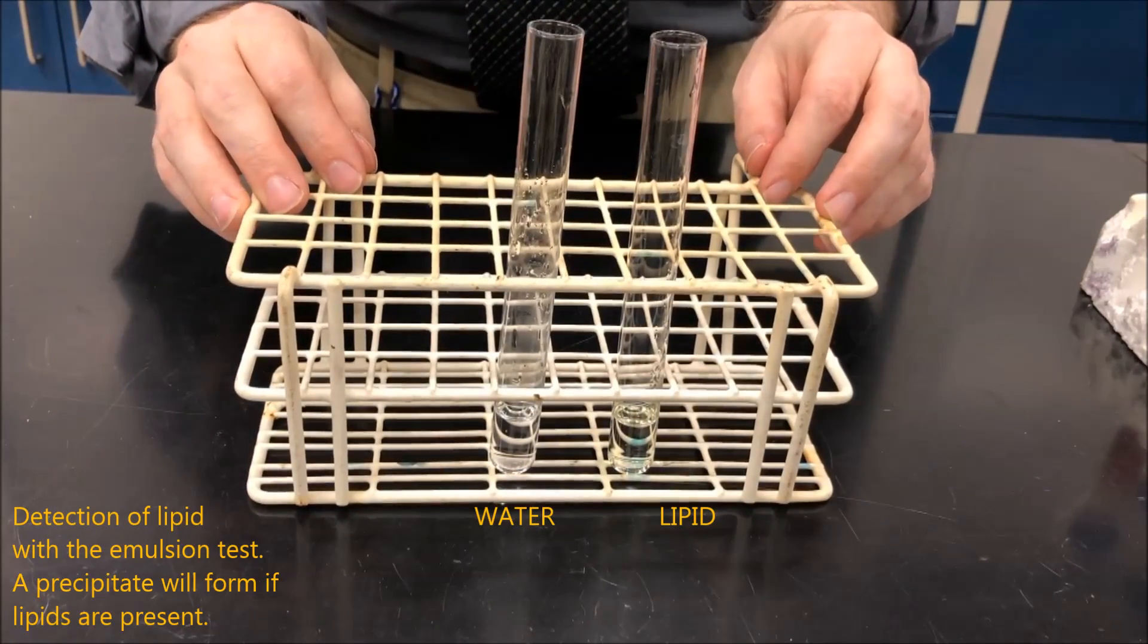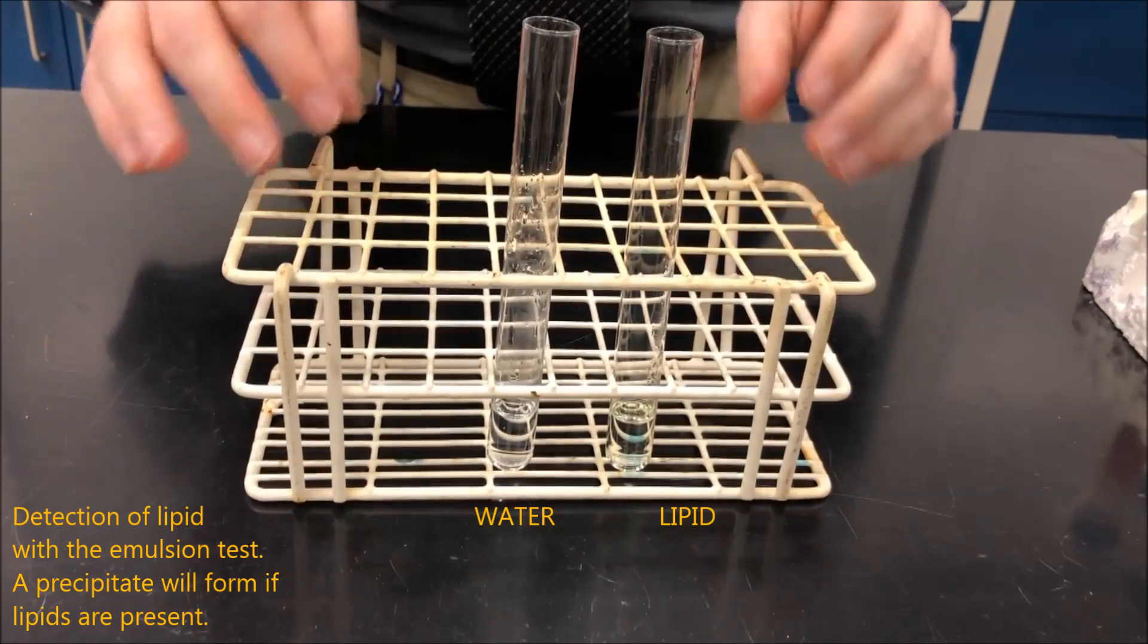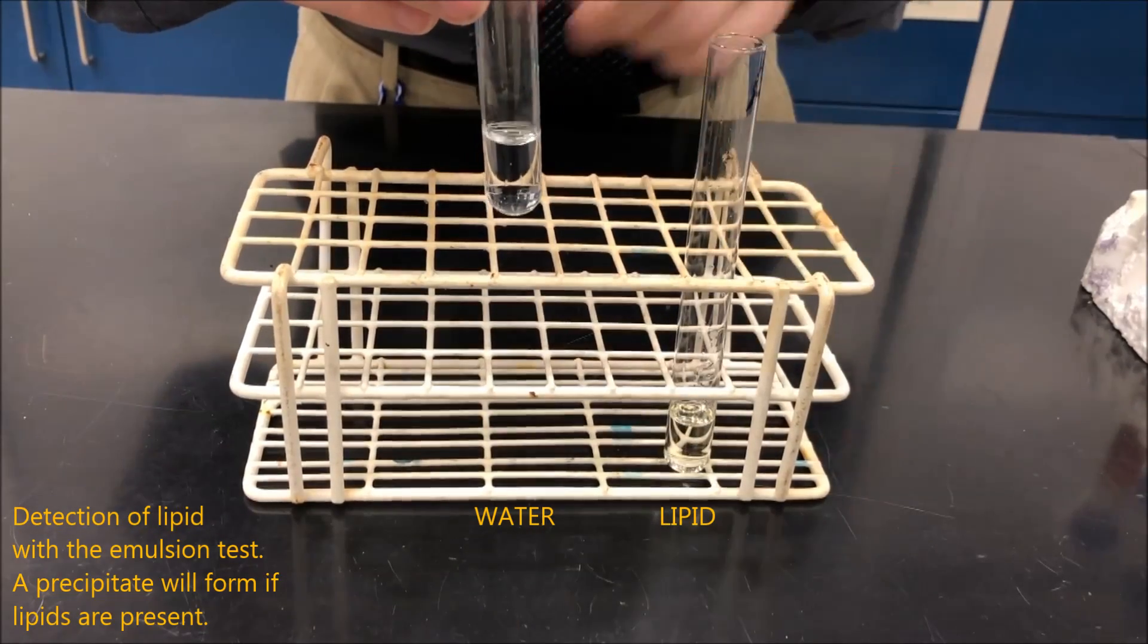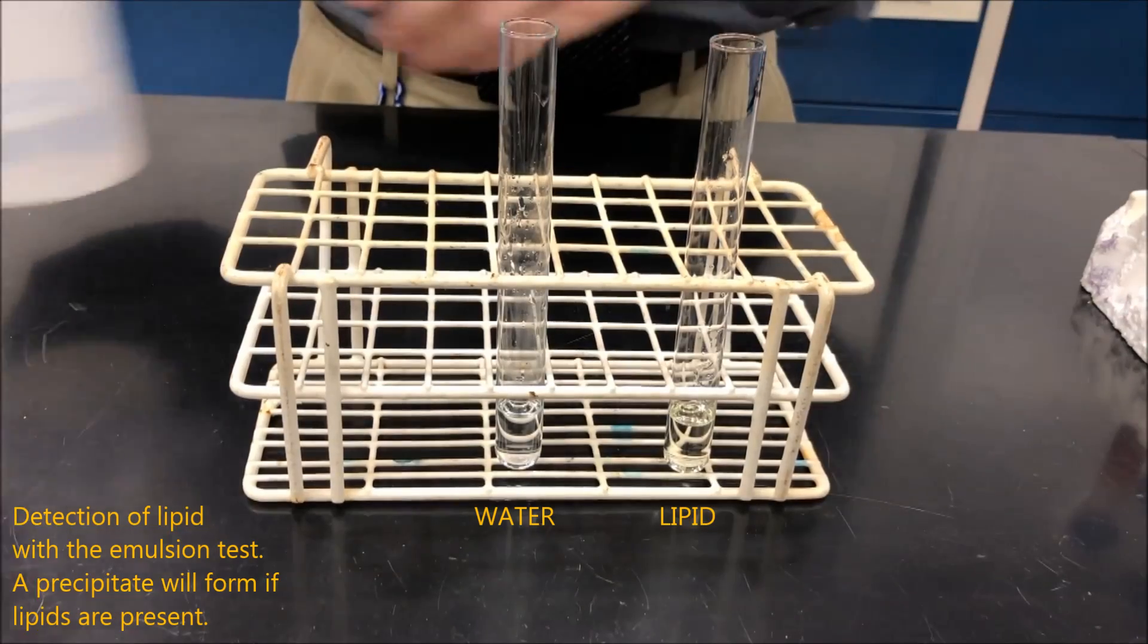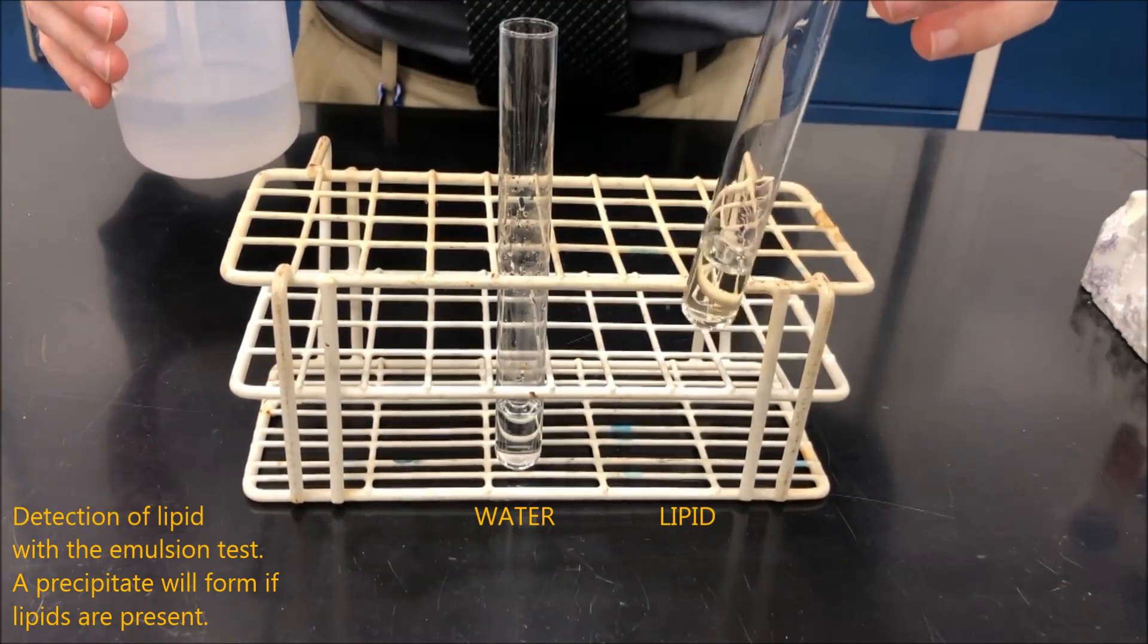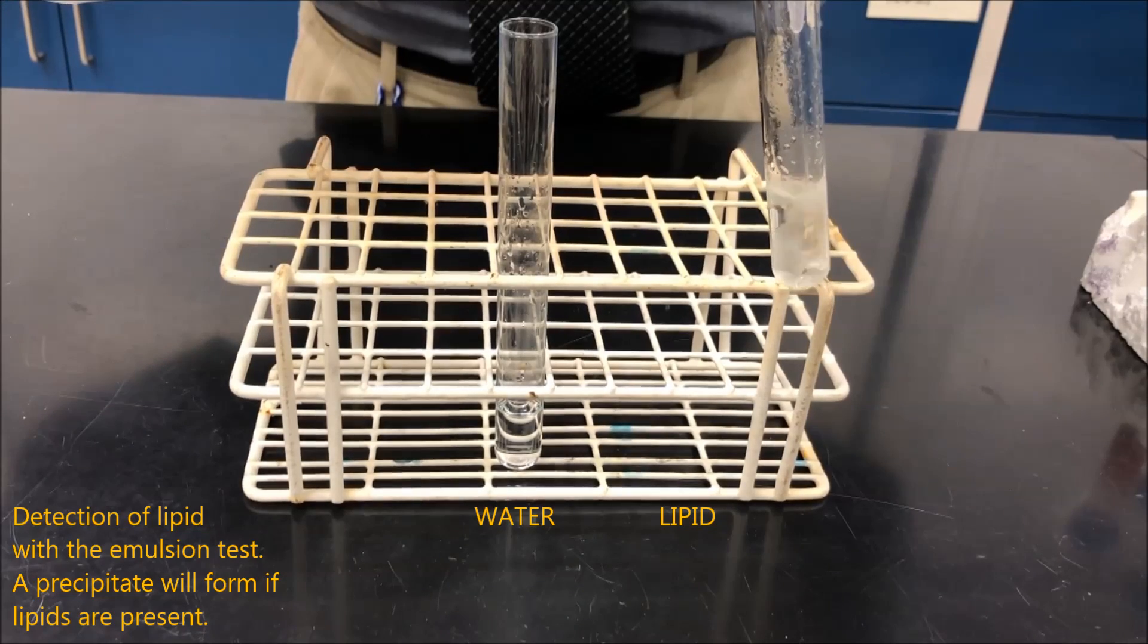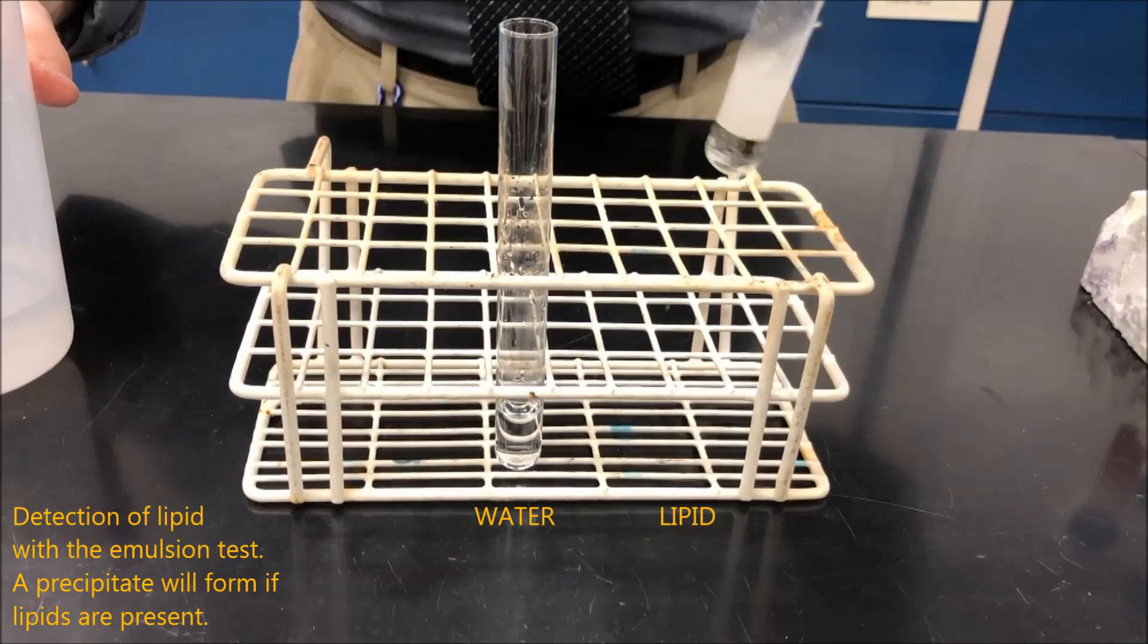To detect the presence of lipids, we can use the emulsion test. So here I have two test tubes. One contains some vegetable oil, lipid, and as a control we have some water. So the first step is to take our substance that we think has lipid in it, and we're going to add a small amount of alcohol. I'm going to mix that up.